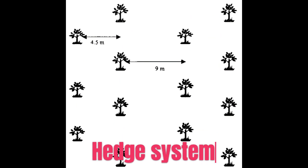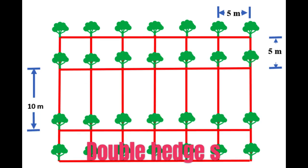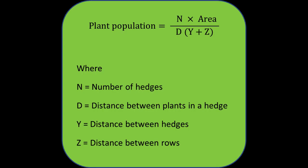In the hedge system, the area is divided into hedges where crops are planted at closer spacing. It may be single or double hedge. In the single hedge system, the hedges are set apart at wider spaces. In the double hedge system, a wider spacing is given after every two hedges. The plant population in the double hedge system is 22% more than the single hedge system. Plant population is calculated by the product of number of hedges and area, divided by the product of distance between plants in the hedge and the sum of distance between hedges and distance between rows.